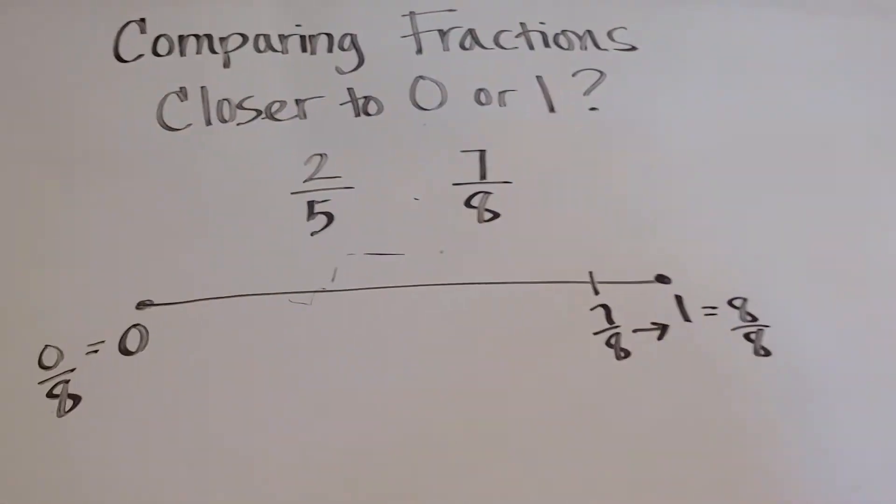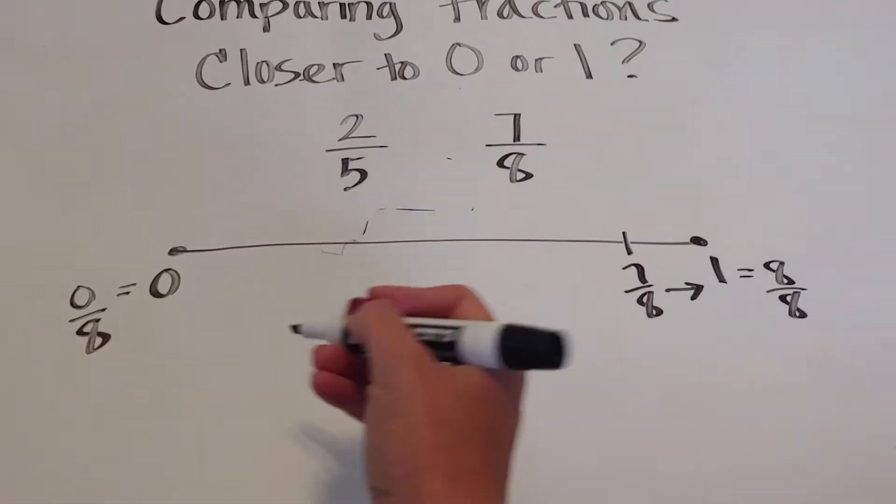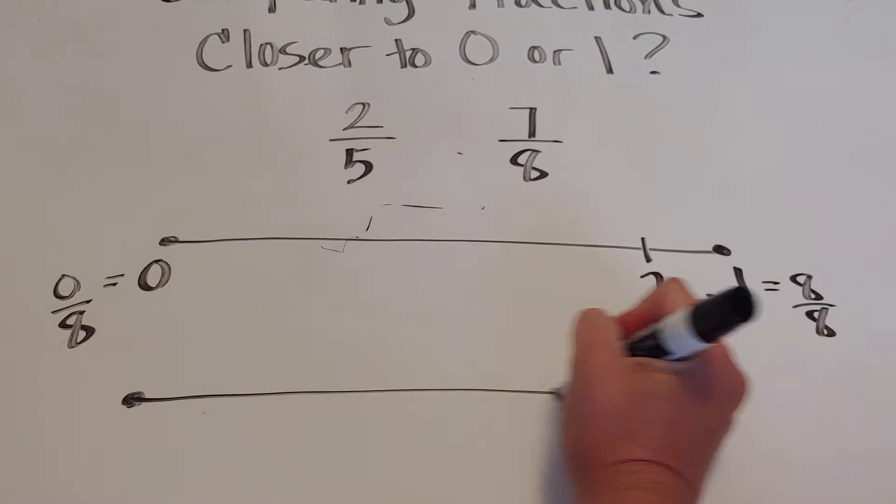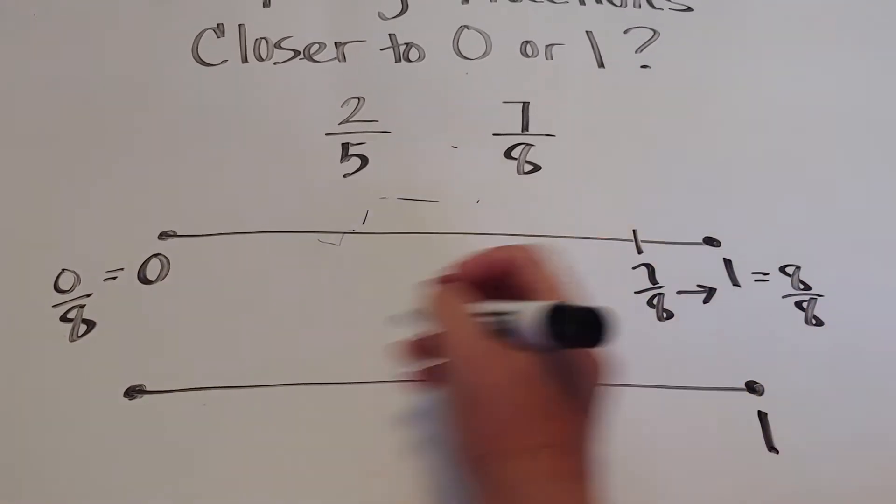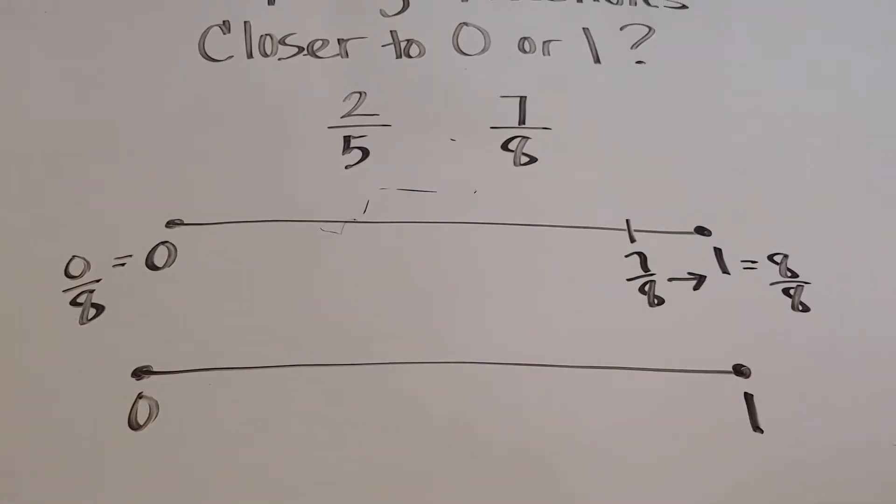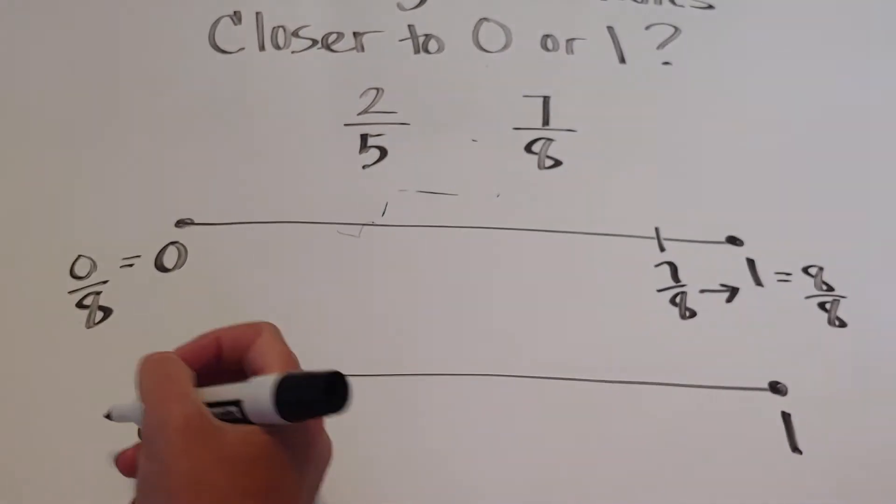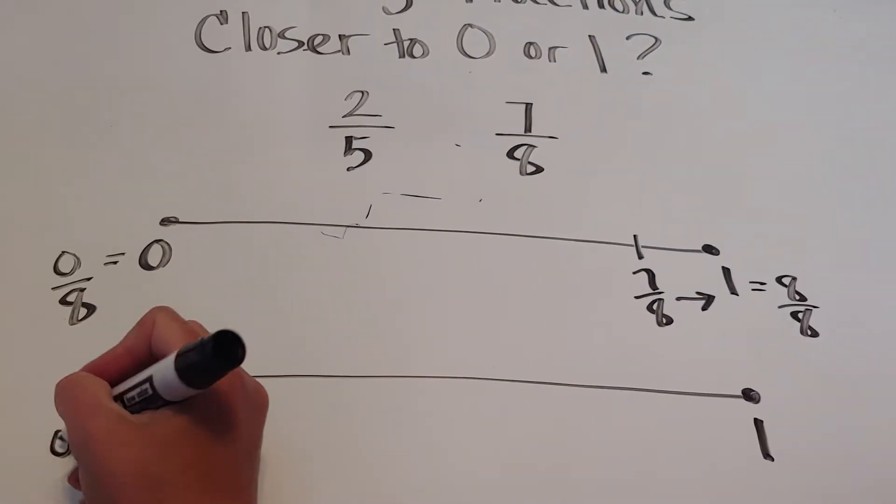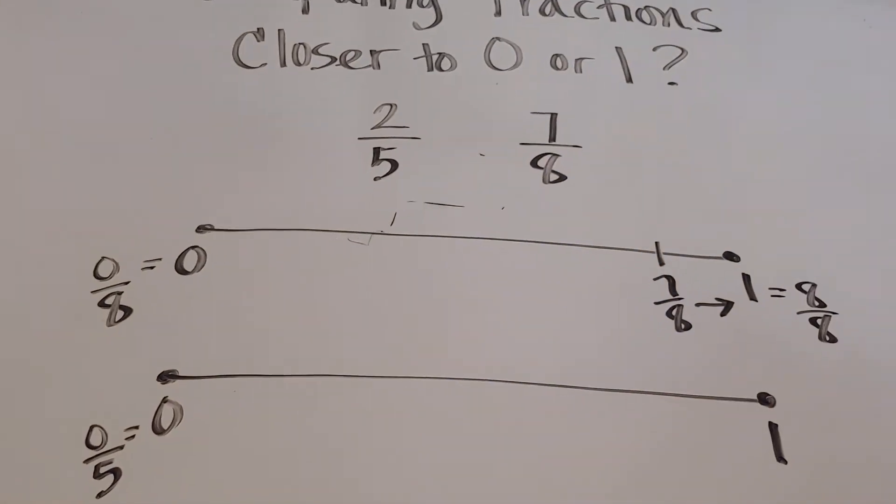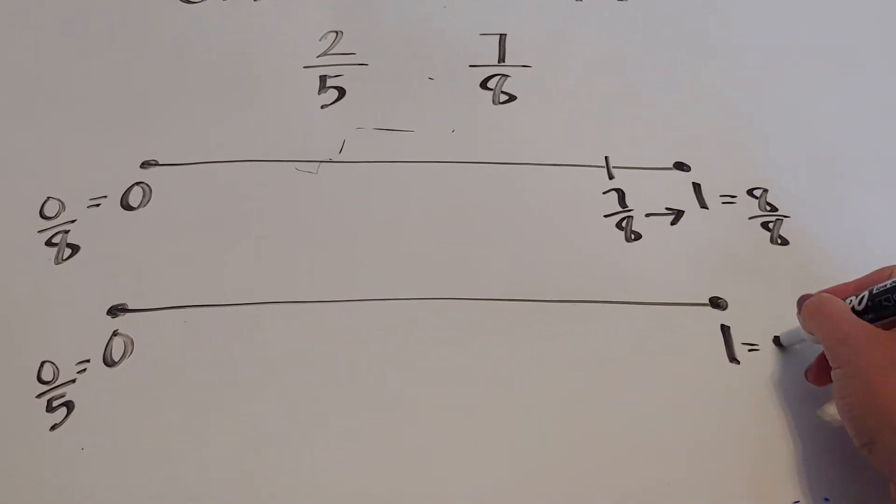Now let's do the same thing with two fifths. Here's zero and one. If I'm doing fifths, then this is the same as zero fifths, and this is the same as five fifths.